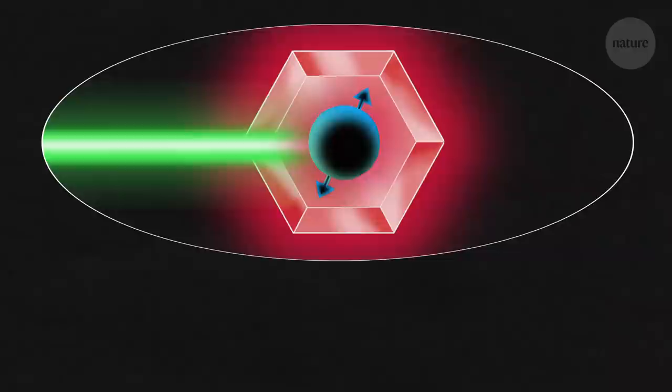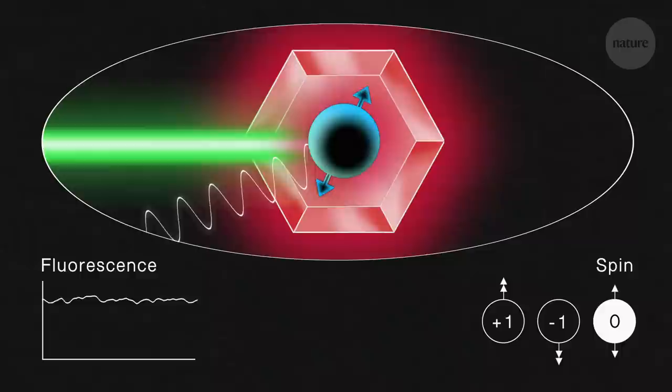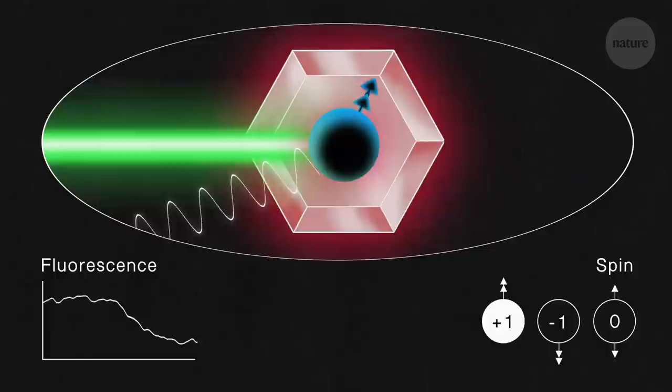And researchers can use this to check what the spin is up to. A microwave at just the right frequency can flick an NV center from zero spin to up or down, a change that causes the red light to dim.